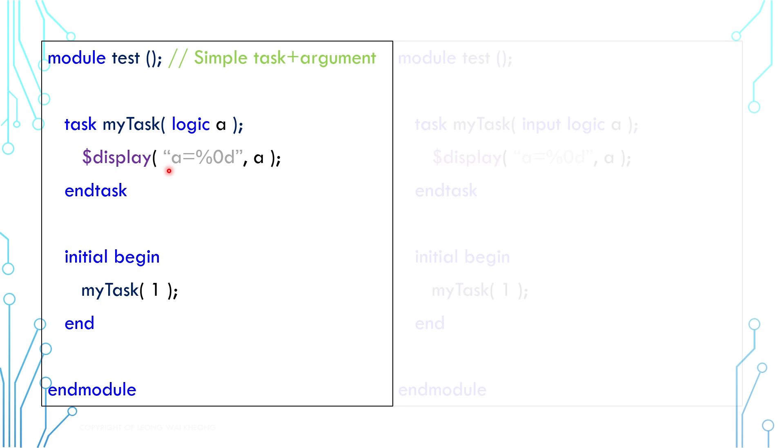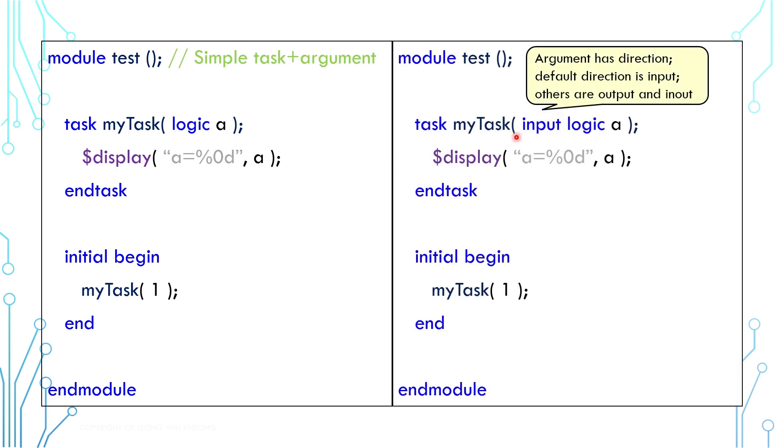This is writing the same task in a complete form. What we left out previously is that the argument has a direction like a module port. This is unique in System Verilog. Compared to common software definition of a subroutine, they don't have direction for an argument. An argument, the direction is by default input, specifying it as input or leaving it empty is the same.